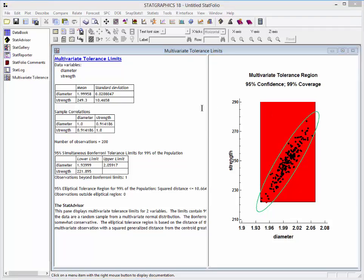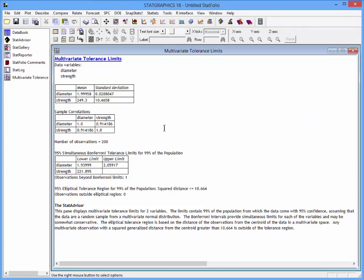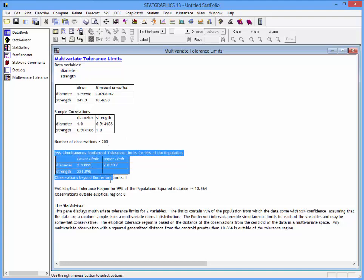Let's take a look at the analysis summary first. The most important results are in this section of the analysis. You see first the 95% Bonferroni tolerance limits for 99% of the population. These are the limits that were estimated using what I called Method 1. The tolerance interval for diameter runs from about 1.94 to 2.06. That's well within the specification limits, which ranged from 1.9 to 2.1. Likewise, the lower tolerance bound for strength is about 221.9, well above the specification limit of 200.